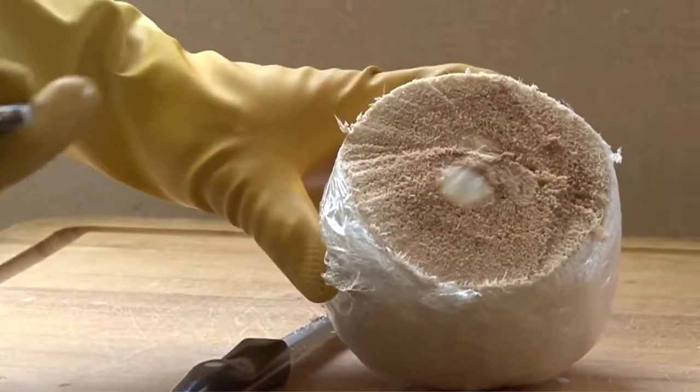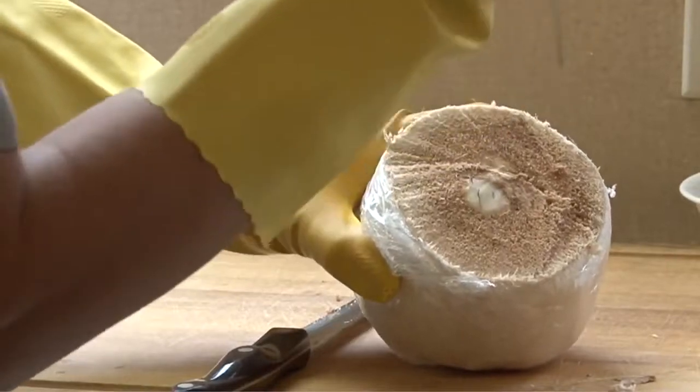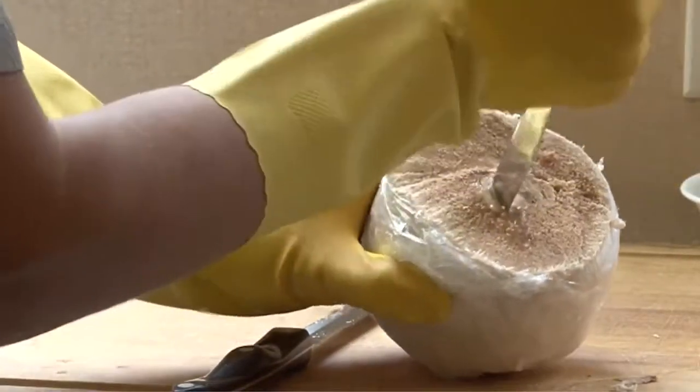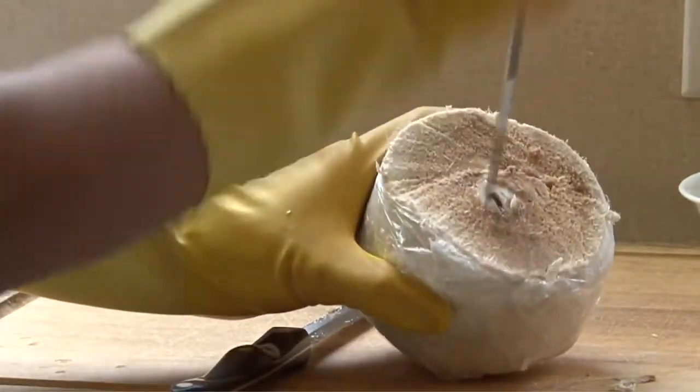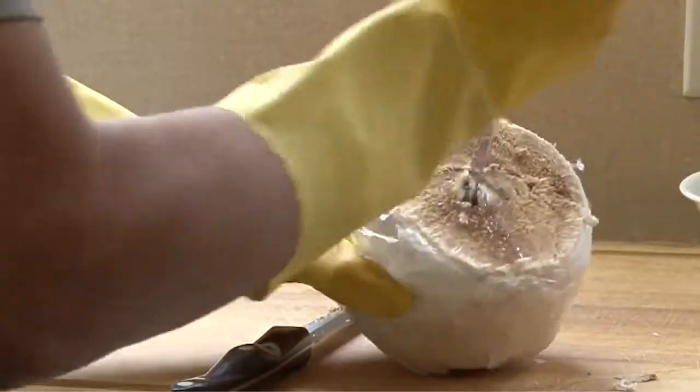get a flat knife and start looking at the soft spot in the middle of the coconut. That is called the eye of the coconut. It's easy to spot. Just dig a hole and pour the water in a glass.